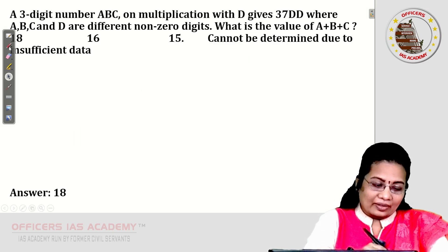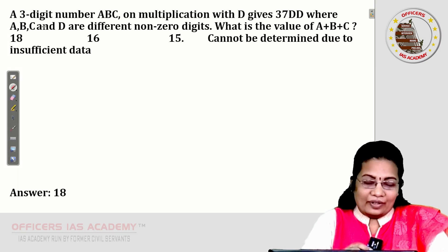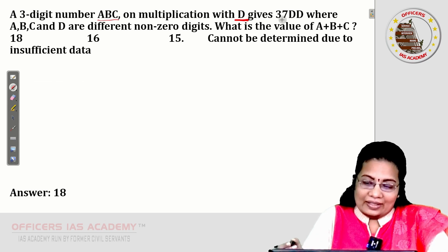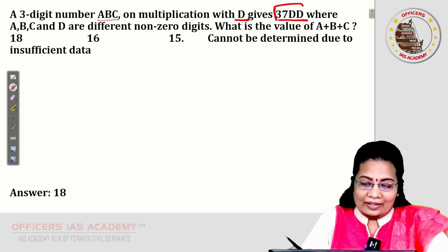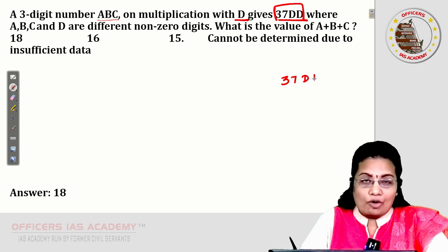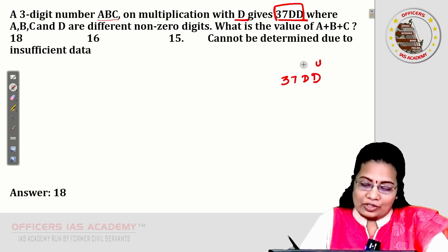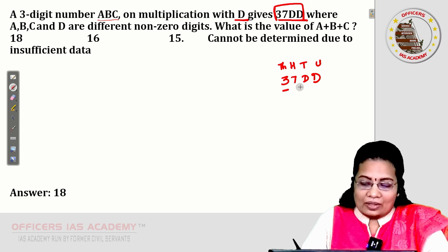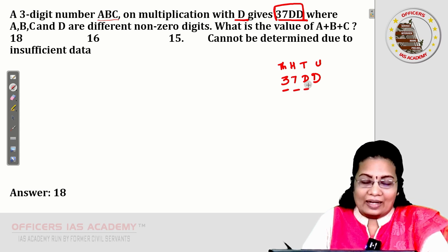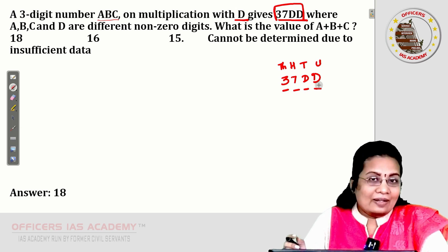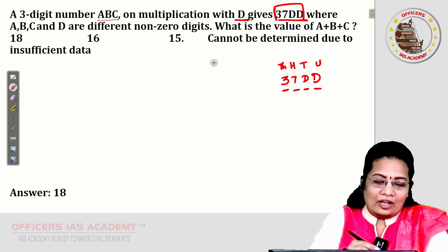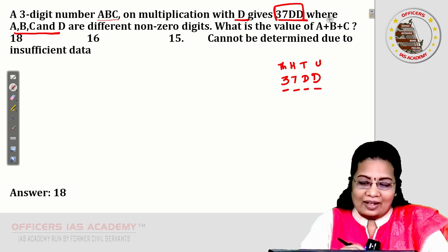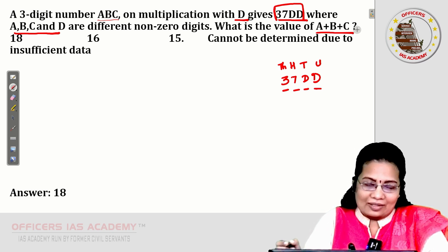Question number 1. A 3-digit number ABC on multiplication with D gives 37DD. Here we need to consider 37DD as a 4-digit number, where 3 is in the thousands place, 7 is in the hundreds place, and D appears in both the units and tens digits. The given condition is that ABC and D are different non-zero digits. What is the value of A plus B plus C?